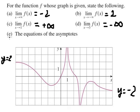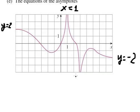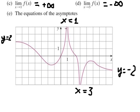For question e, the equations of the asymptotes: we have y equals negative two, y equals two, x equals one, and x equals three. And that is the answer for question e.